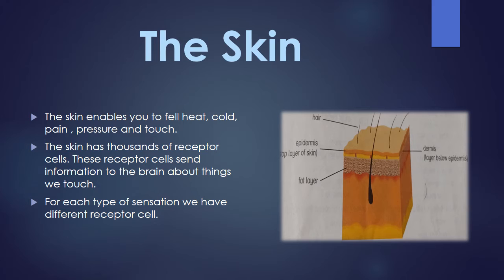Skin. The skin enables you to feel heat, cold, pain, pressure, and touch. So basically with the help of your skin you can feel different sensations — like if something is hot or cold, if you are feeling pain or pressure. You can detect it by touching anything.